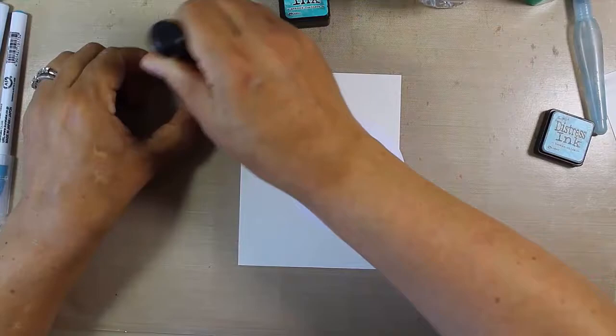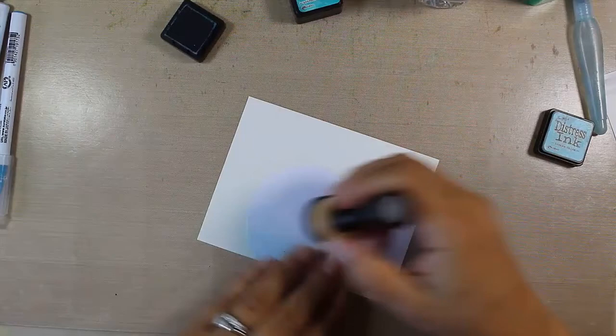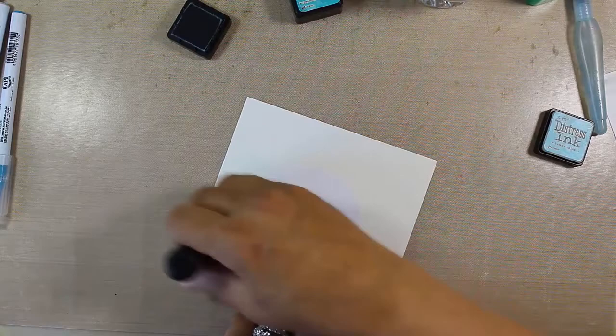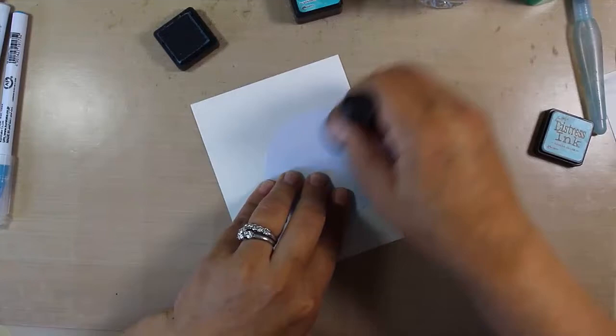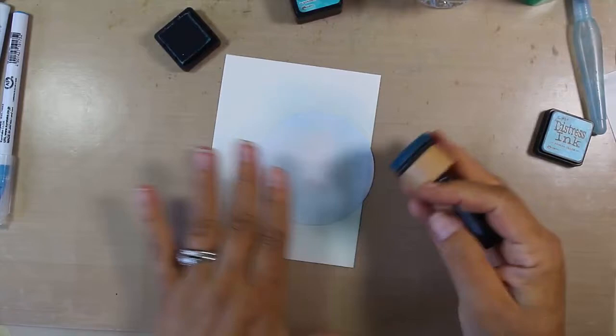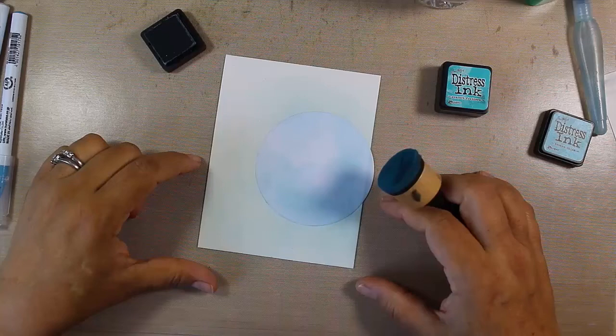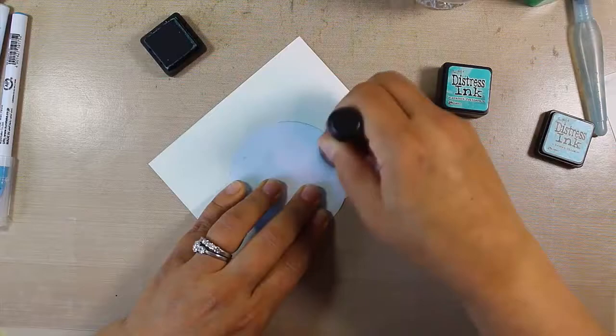We're just going to start on our mask and then work onto our paper here. I love to do this on watercolor paper because it works so much better than regular cardstock. You just get this really flawless look. It really lends itself to distress blending really well. Now I'm going to add my other color, Peacock Feathers.